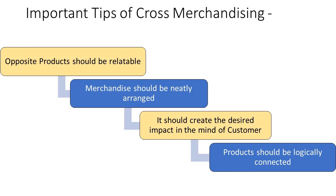The first important tip is that complementary products should be sensibly displayed so customers can relate them to each other. For example, you can display a hanky with a formal shirt, but you cannot display a scarf with a formal shirt — that doesn't make sense. The second tip is that merchandise should be neatly arranged without giving a cluttered look at the store.